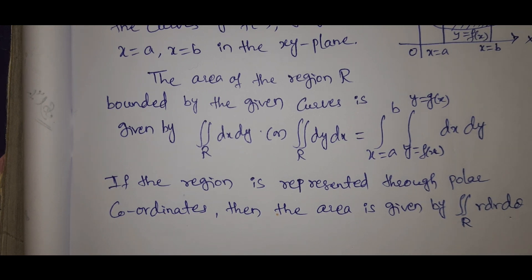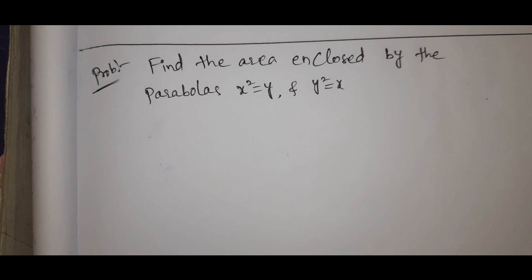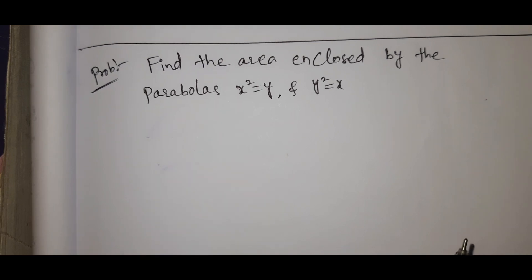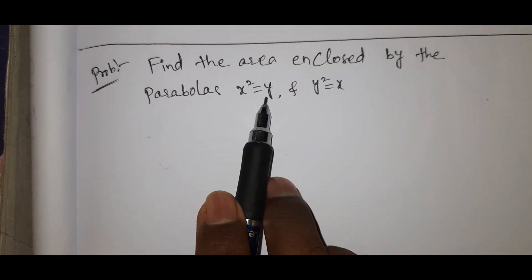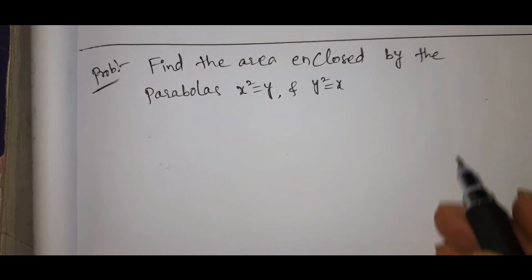Let's see the problem. Find the area enclosed by the parabolas x² = y and y² = x.